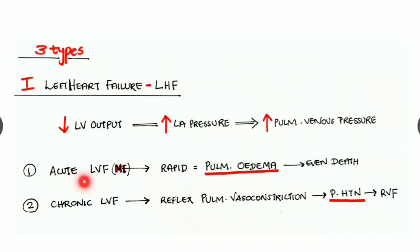Left heart failure can be of acute or chronic type. Acute left ventricular failure is seen in MI — myocardial infarction. It causes rapid pulmonary edema. Due to this acute condition, there is less time for any compensatory mechanisms to prevent the pulmonary edema, so there can even be death.